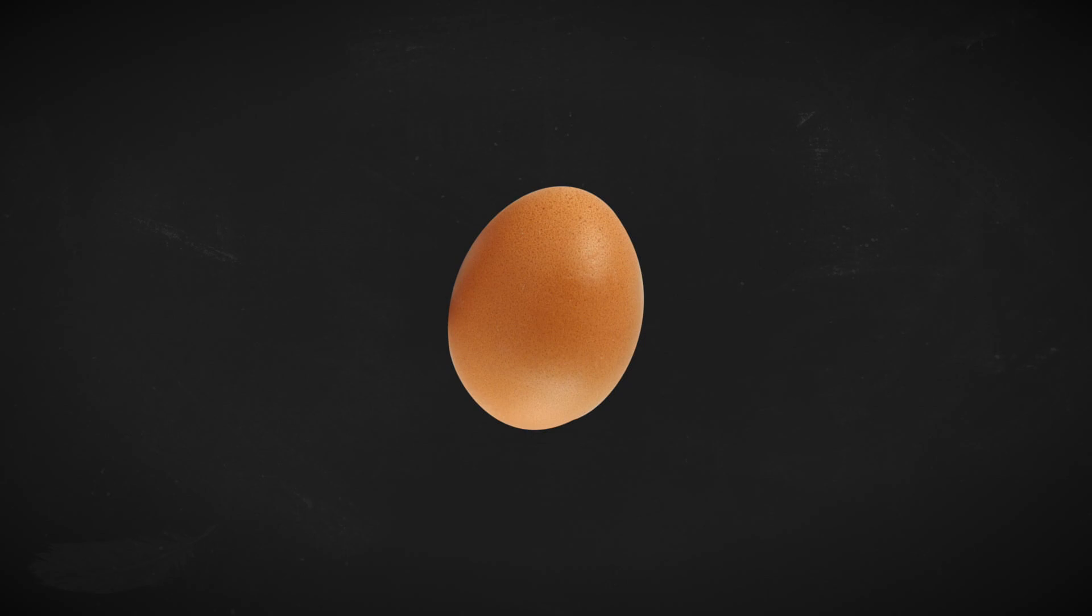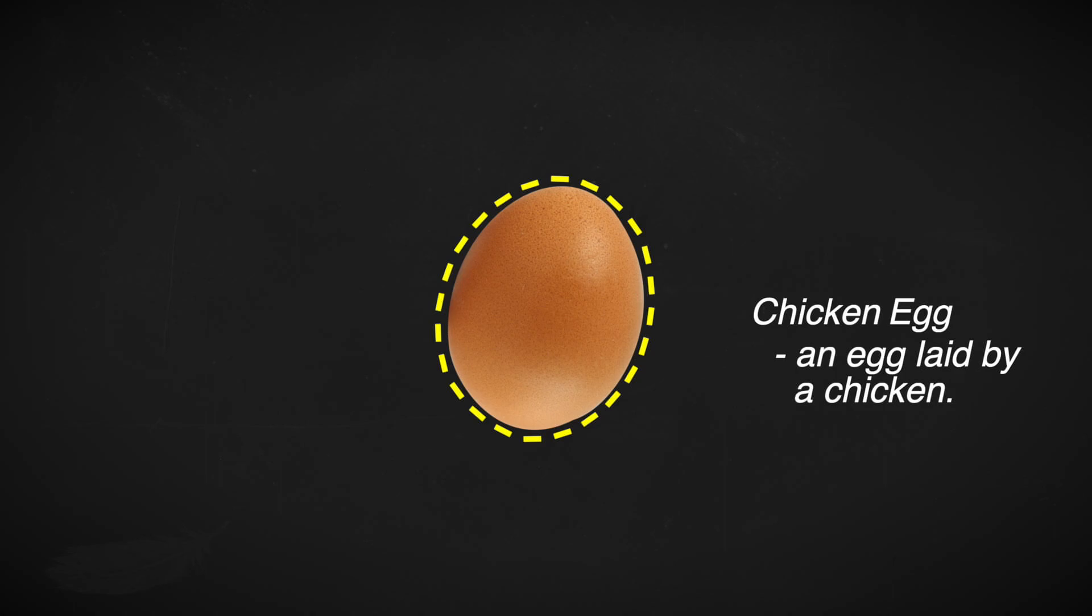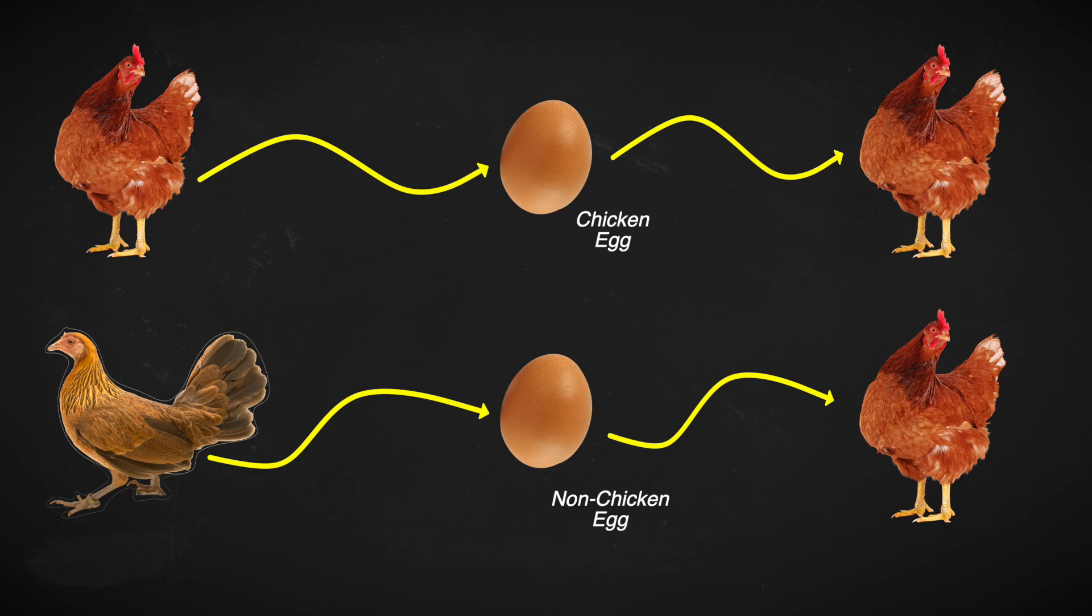However, if we define the egg as being a chicken egg, where the chicken egg is an egg laid by a chicken, then the answer cannot be the egg. In this case, a chicken egg cannot be laid by a non-chicken, but a chicken can hatch from a non-chicken egg. And there you have it. The chicken must have come first.